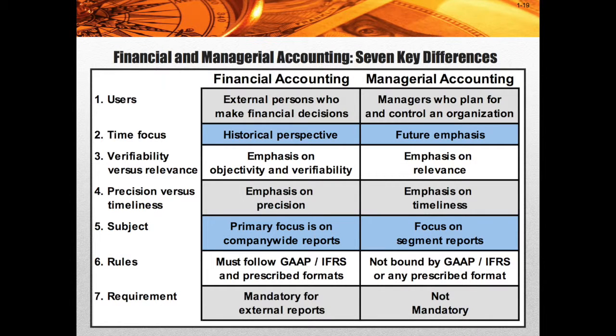In addition, another difference is the subject. The primary focus of financial accounting is company-wide reports. In managerial accounting, we break it down into individual segments and individual managers — so a production line manager would have his own managerial accounting reports for what his production line is doing. In financial statements, we combine all of them; in managerial accounting, we break them into pieces.